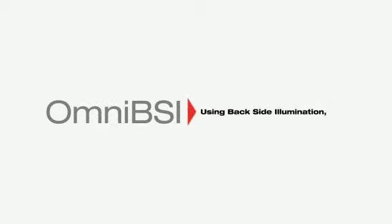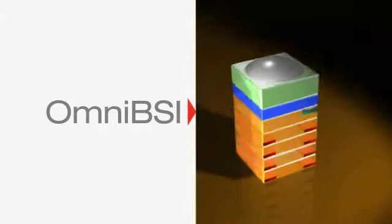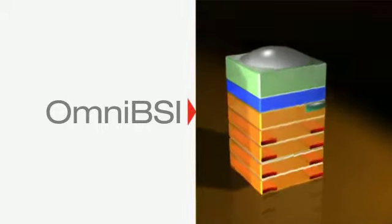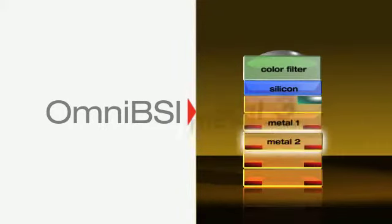Omni BSI is a CMOS image sensor architecture using Backside Illumination, or BSI technology. By flipping the CMOS sensor upside down, light is collected from the backside of the sensor, with the metal and dielectric layers residing underneath the sensing area.